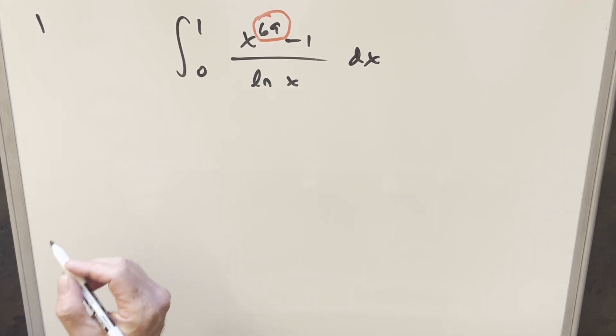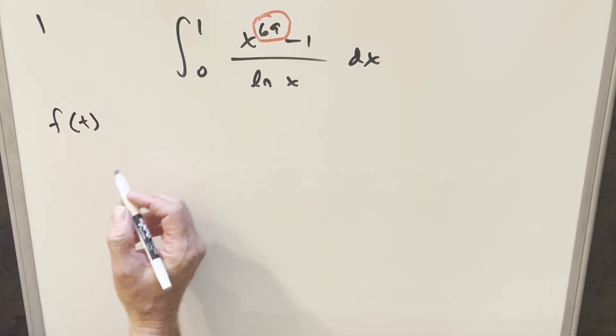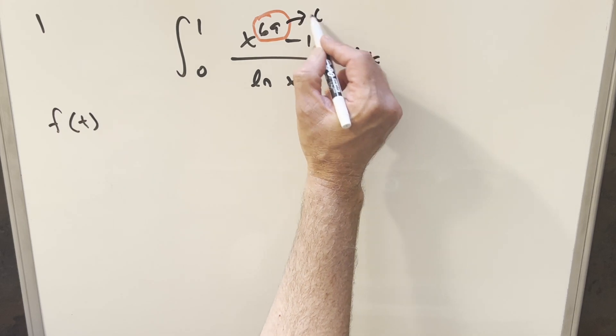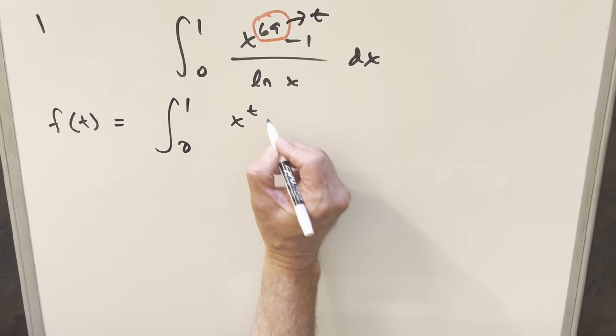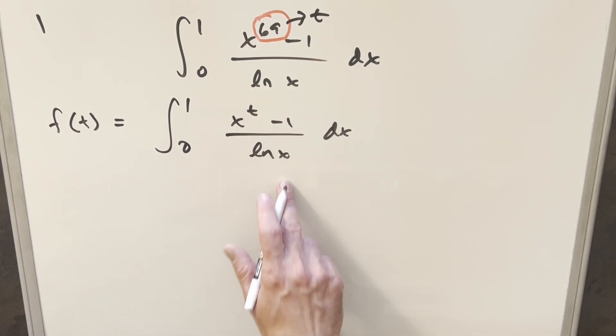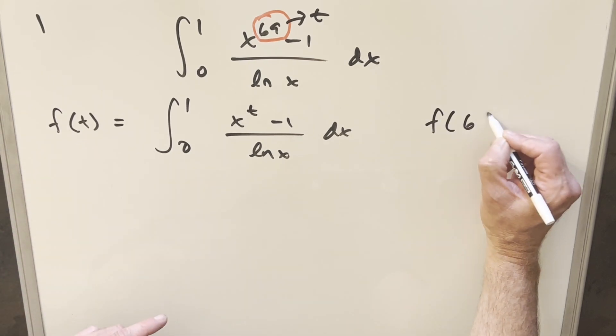So what I want to do for this is, let's actually do this using Feynman's technique. I'm going to rewrite this and parameterize this. We'll call this exponent t instead of 69 for a second. So when I rewrite this, I'm going to have this as x to the t minus one over ln x. Just noticing that when we want to get back to our original solution, we're just going to want f of 69.